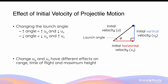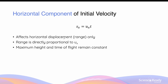This is important to understand because when we are changing either the initial vertical component uy or the initial horizontal component ux of an object about to undergo projectile motion, it will have different effects on the object's range — the horizontal displacement — the time of flight, and also the maximum height or vertical displacement it reaches before coming back down.